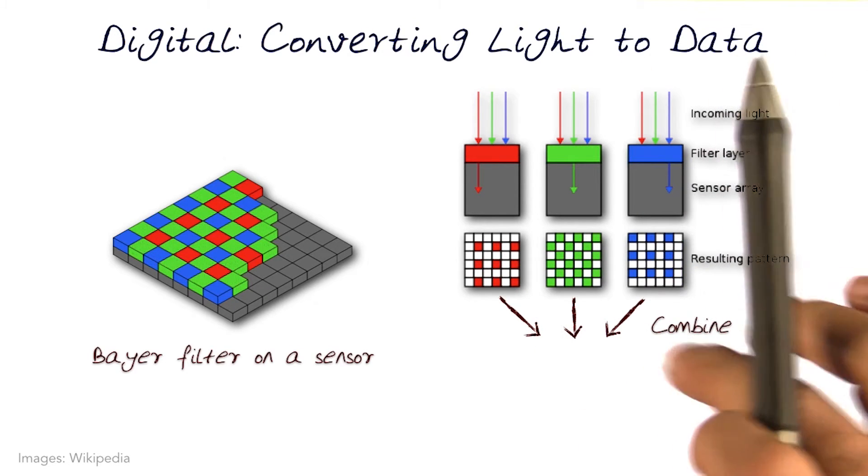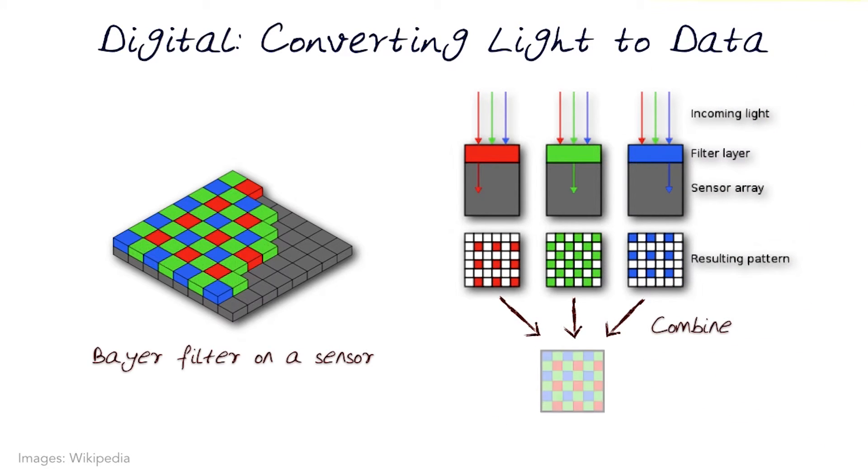Then of course, it's the combination of these three channels that gives us the final image, and this is the one that we need to then decode and save.